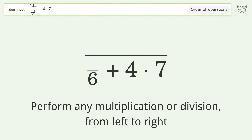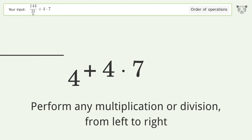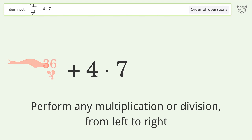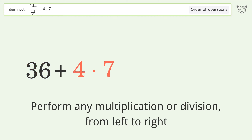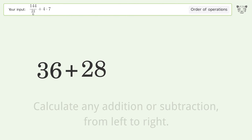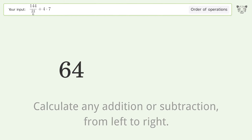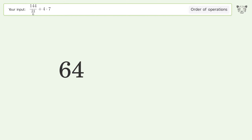Perform any multiplication or division from left to right: 24 over 6 equals 4. Then 144 over 4 equals 36, and 4 times 7 equals 28. Finally, calculate any addition or subtraction from left to right: 36 plus 28 equals 64. So the final result is 64.